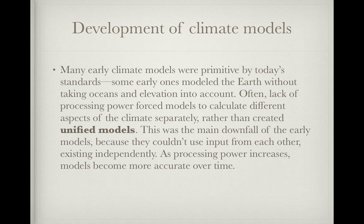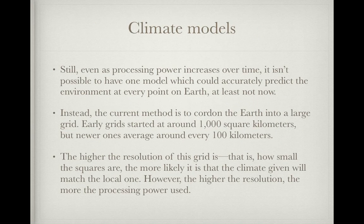As processing power increases, models do become more accurate over time, within reason. Even so, it still isn't possible to have one model which could accurately predict the environment at every point all at once — at least not now. Instead, the current method is to divide the Earth into large grids. Early grids started at around 1,000 square kilometers, but modern ones average around every 100 kilometers. The higher the resolution of the grid — that is, how small the squares are — the more locally accurate the model is. However, the higher the resolution, the more processing power is used, so it's a balance.